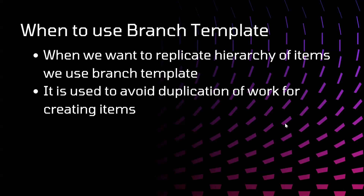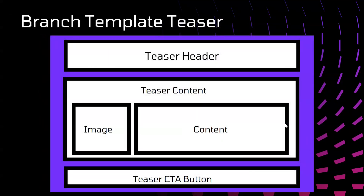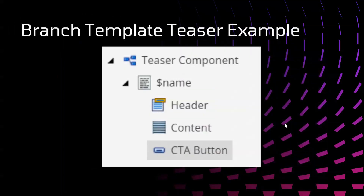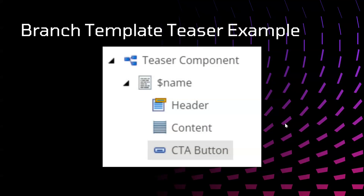Here is an example of a branch template for a Teaser. We have a main Teaser, inside that we have Teaser Header which will have the title, Teaser Content which will have images and content, and Teaser CTA Button which will have a button to go to the entire content. So in this way we create a Teaser component — inside that we have the teaser with header, content, and CTA button.